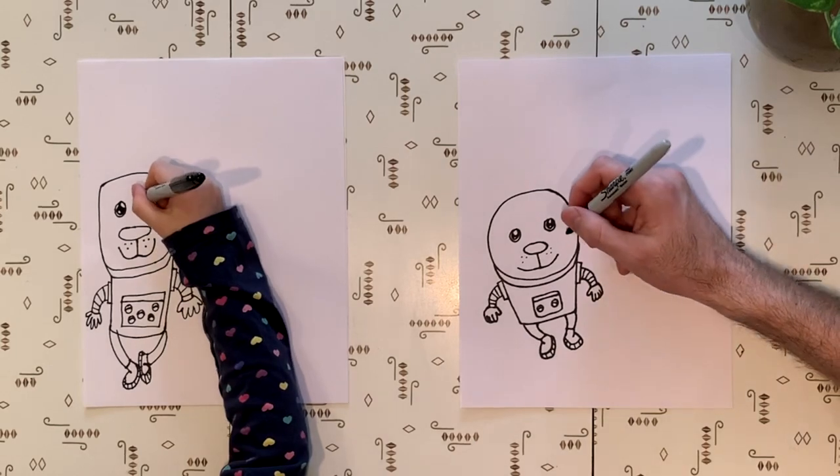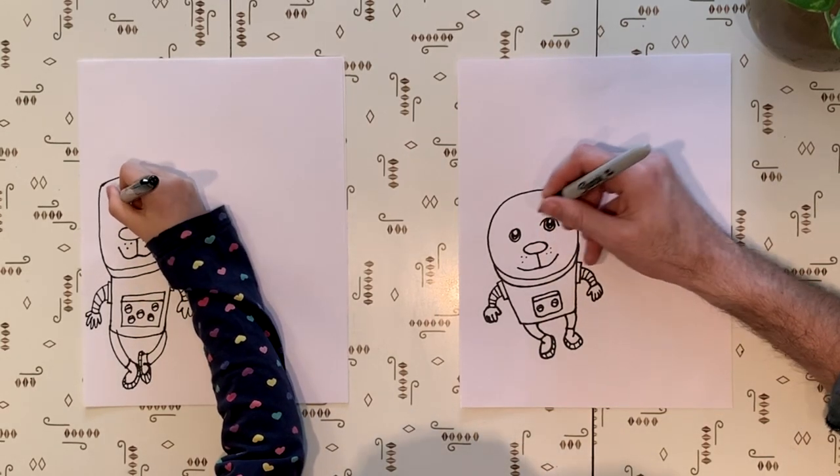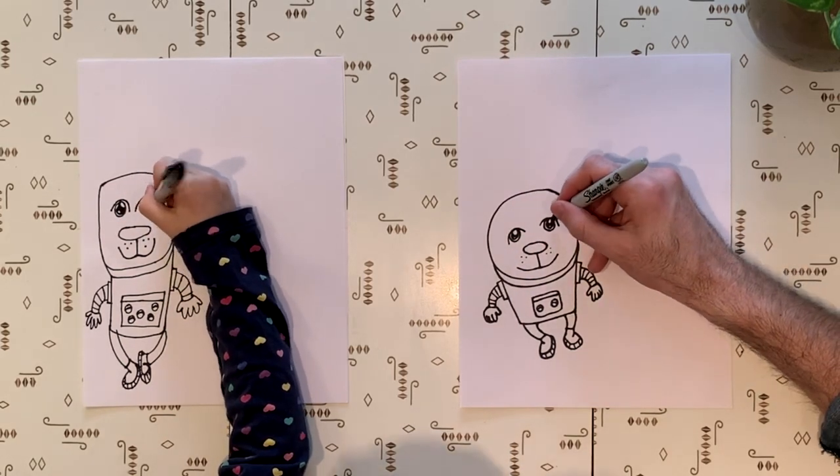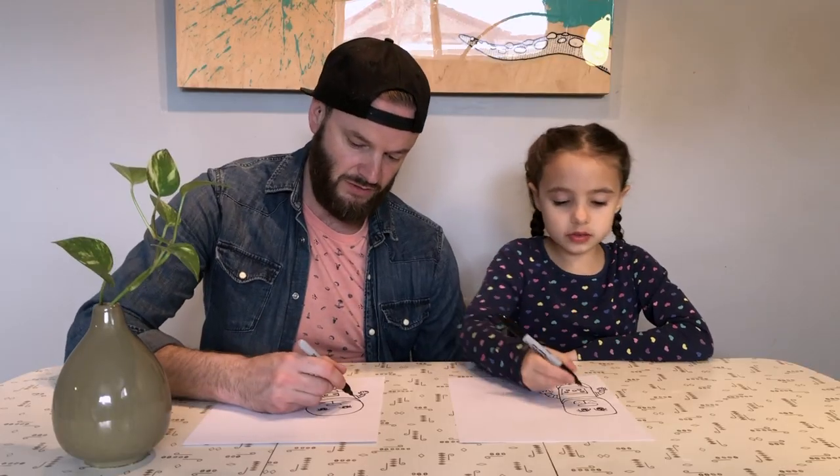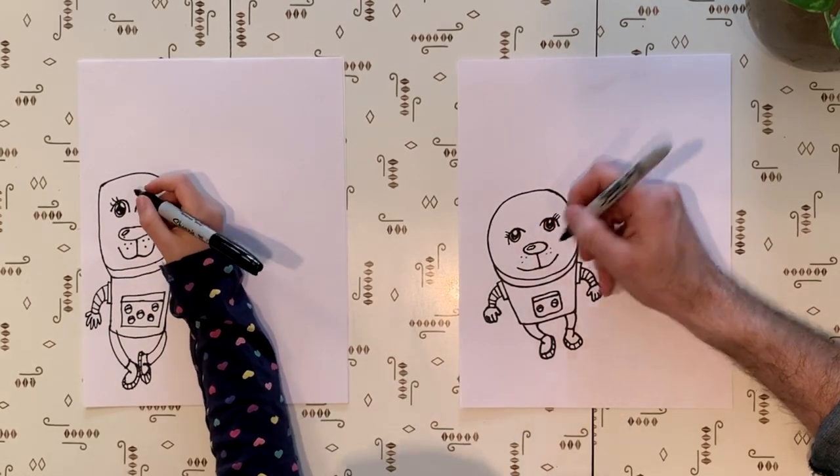Yep. Color that in. And then a little curve around each eye. And eyelashes. Now that is a bunny. That is true. Okay. It's a little shiny, shiny glow.